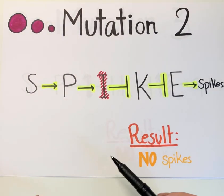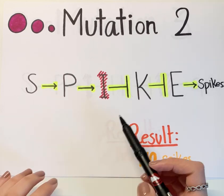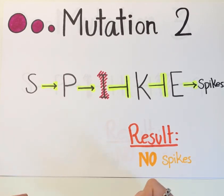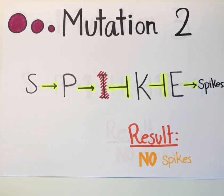In this scenario, we are presented with a mutated I gene, so K gene cannot be inhibited. In other words, K gene will be expressed if I gene is not present to block it. Similarly, E gene cannot be inhibited when K gene is activated, resulting in spikeless cells at the end of the pathway.